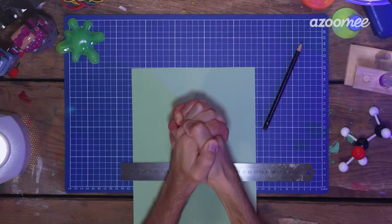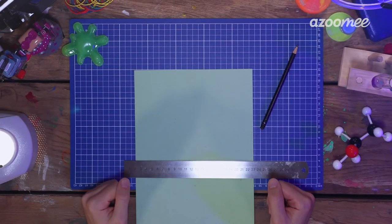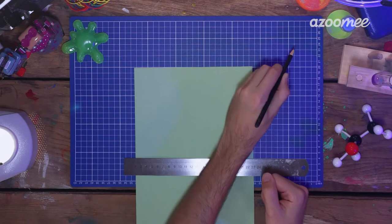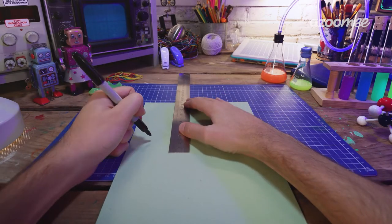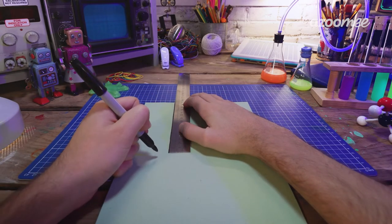Start off with the card, ruler and pencil. Using your pencil or a marker, measure out a long rectangle shape. This can be any size you want.